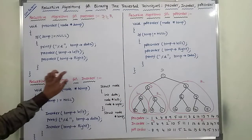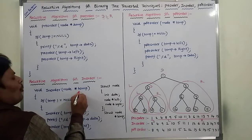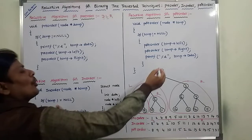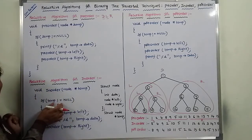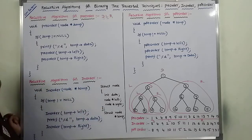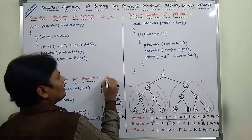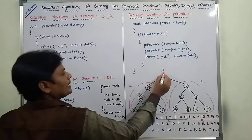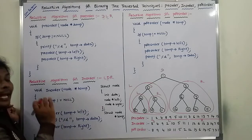Next, go for the recursive algorithm for in-order. Void in-order(node pointer temp) — temp points to the root node. If temp is not equal to null, root node is not empty, so this condition is true. In-order is L, D, R: first in-order(temp->left) — left sub-tree is visited recursively. Once all vertices in the left sub-tree are visited, then print the root node value.